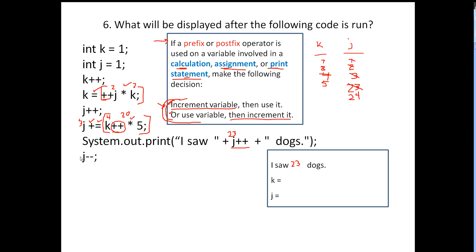The next thing we do is decrement J, so it becomes 23.